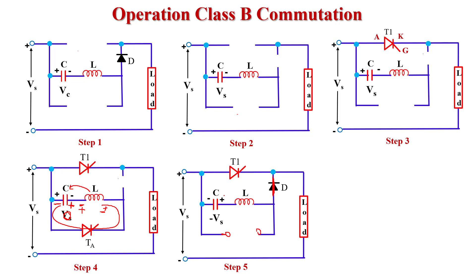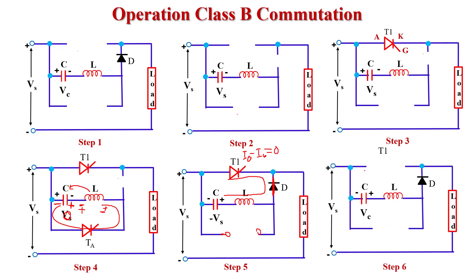The capacitor now discharges again through the inductor, diode, and T1 thyristor. If the current across T1 is I0 and the capacitor current also reaches I0, the difference is zero — so the current across T1 thyristor becomes zero and T1 turns off, behaving like an open switch. TA is already off. After that, the capacitor recharges from VS supply voltage to +VS, and we return to the initial condition.